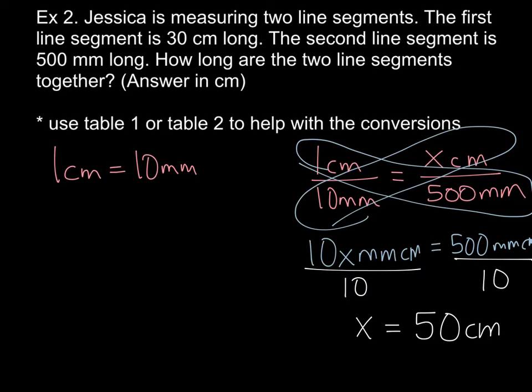Now I'm not done because I haven't actually answered the question. I've just done the conversion of 500 millimeters to be 50 centimeters. So now I just have to do the simple little math problem here, which is 30 centimeters plus 50 centimeters, which gives me a total of 80 centimeters. So the two line segments, when they're added together, is equal to 80 centimeters.